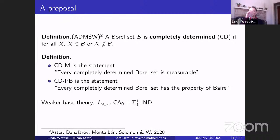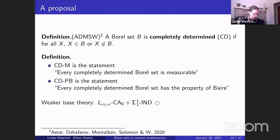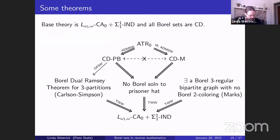We end up with two statements: CDM (completely determined measurable) and CDPB (completely determined property of Baire). These are the two axioms used in the two different proofs of the no-Borel-strategy result for the prisoner hat problem. Using this weaker base theory, we now want to say something about the relative strength of these two theorems.